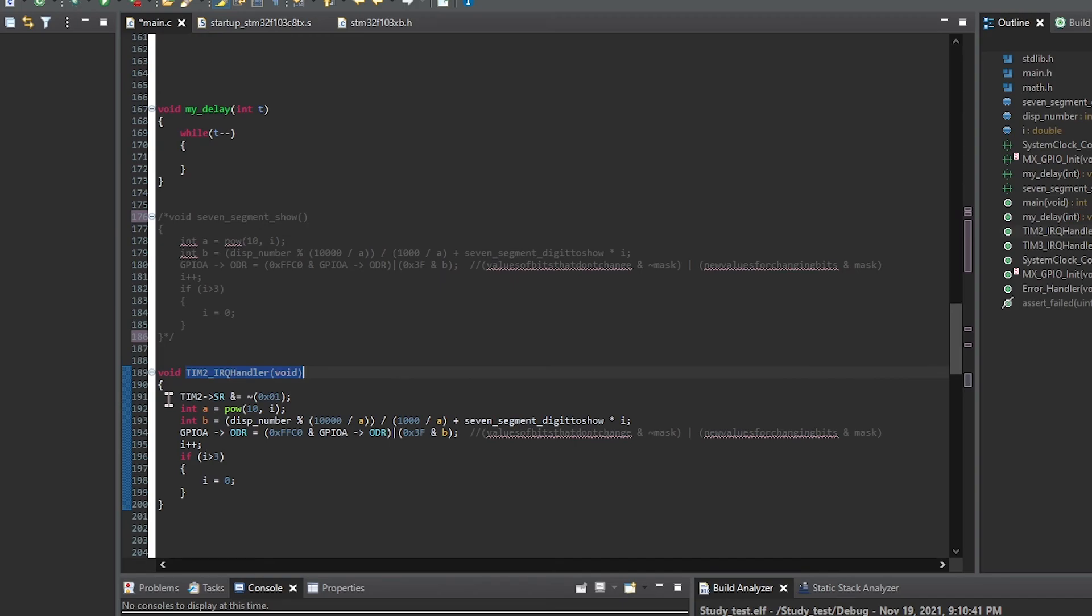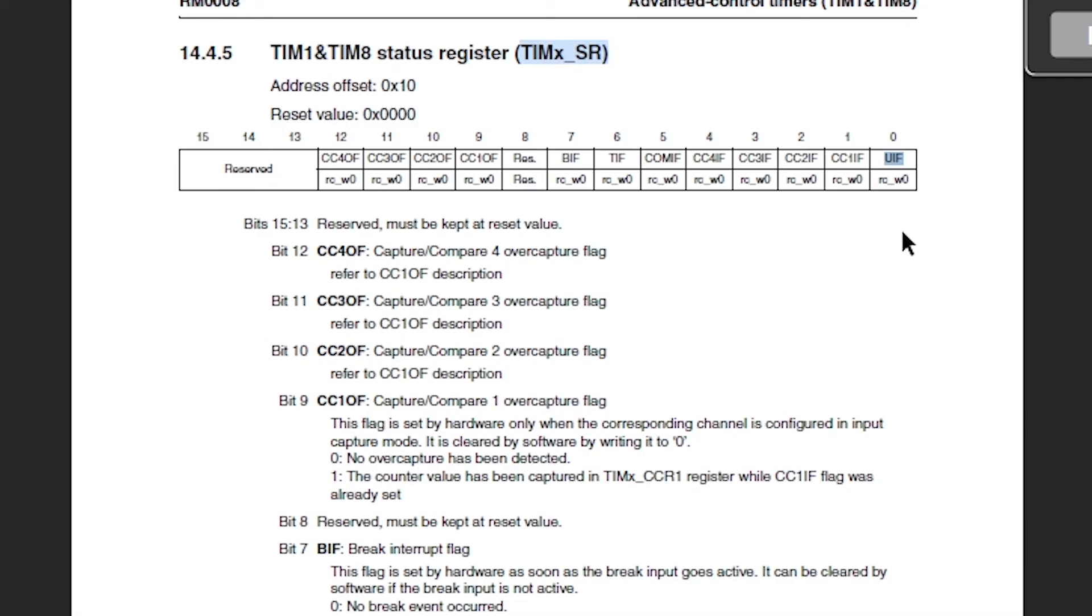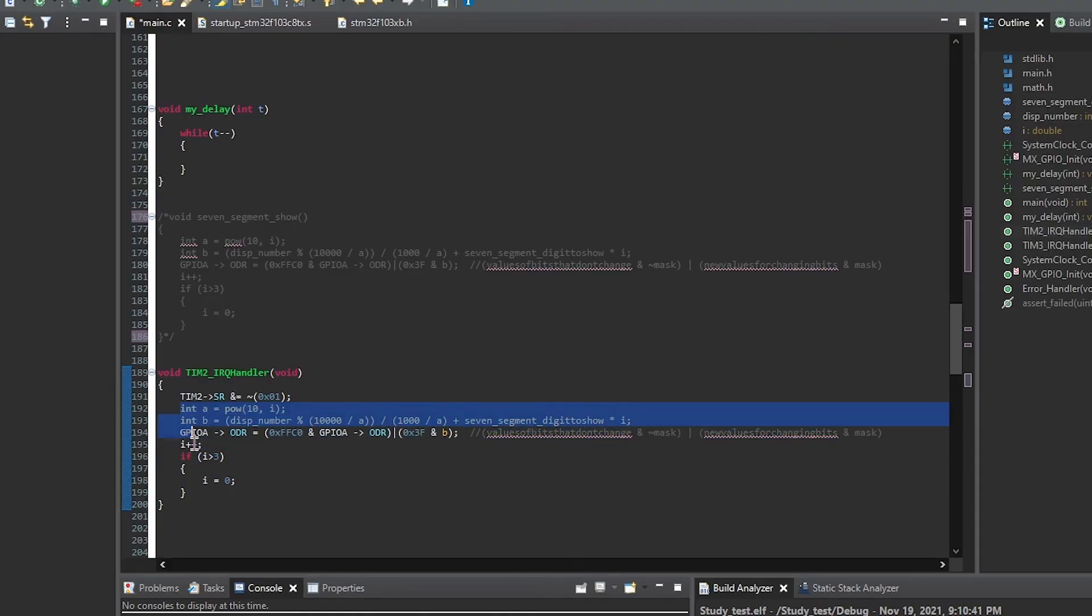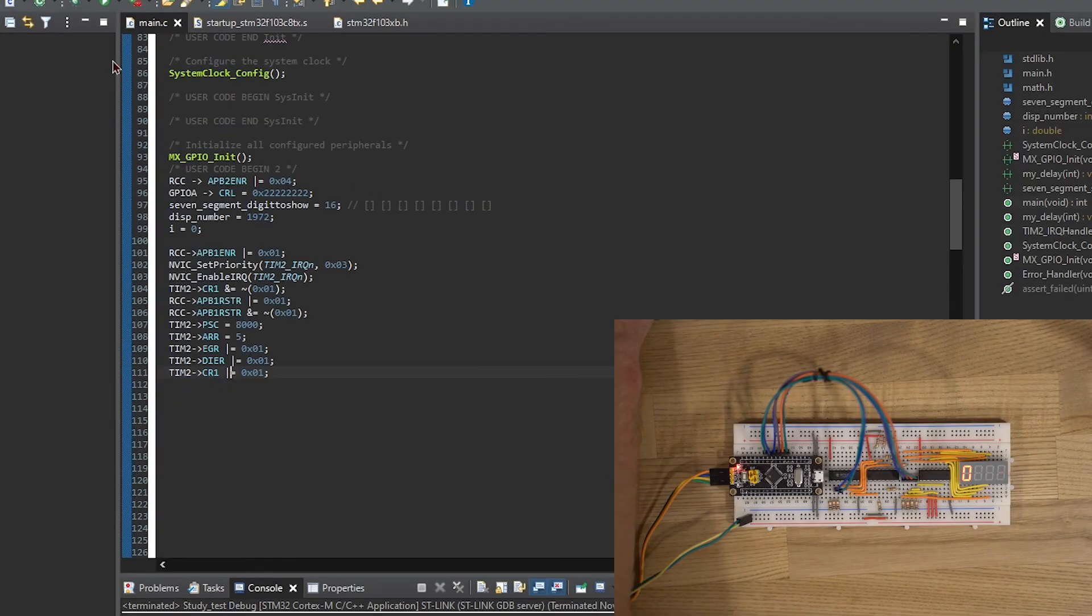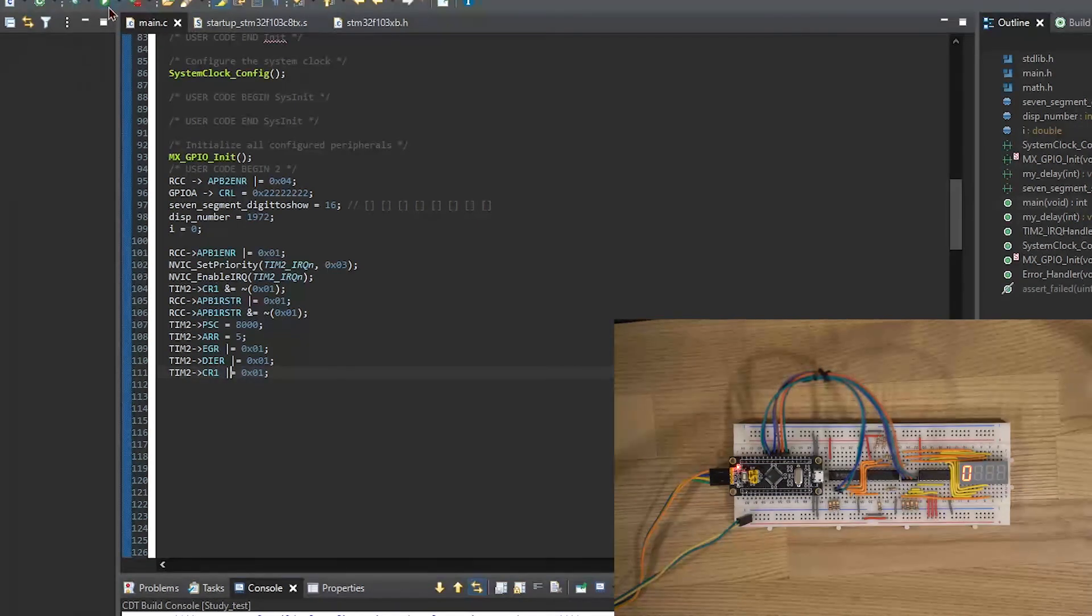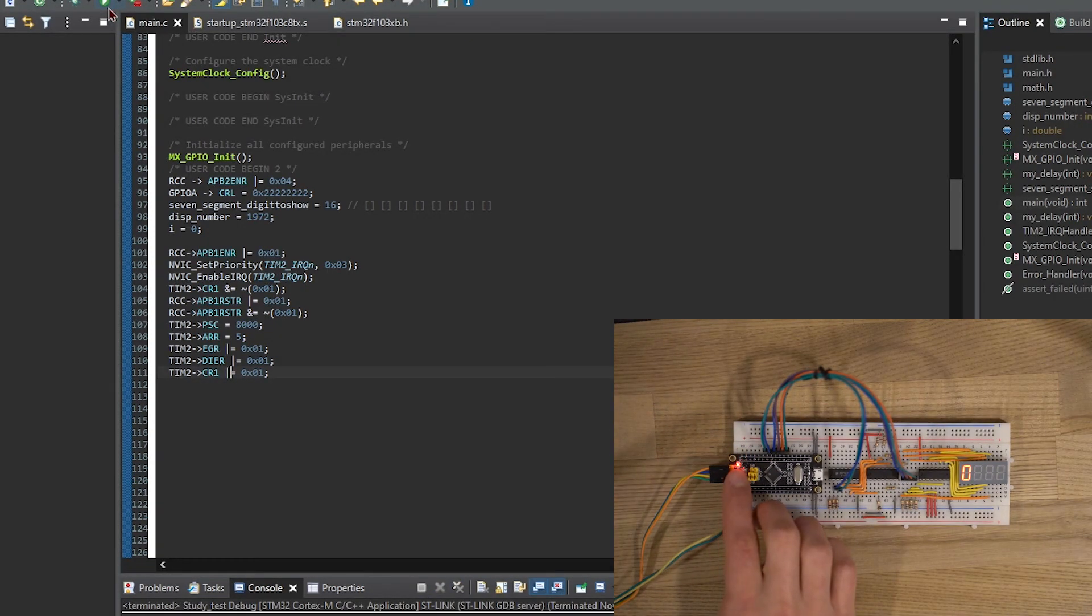What we do here is we configure the status register for our timer 2. As you can see, we set 0 to bit 1. So we just manually reset this flag as our interrupt event already occurred. And then we just do all that display thing. So let's upload our code. And here we go. It works again.